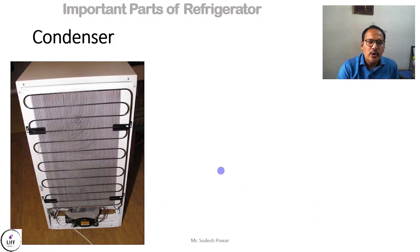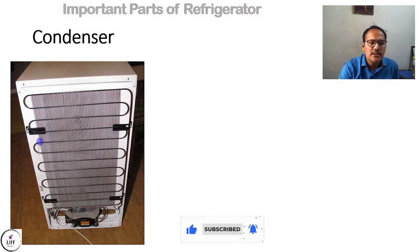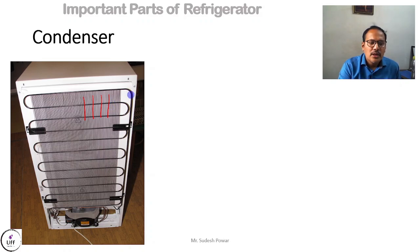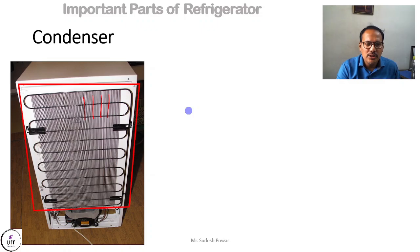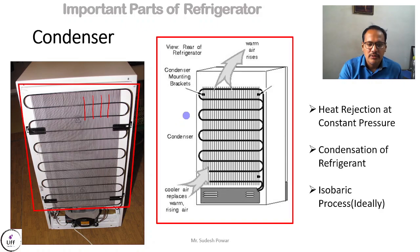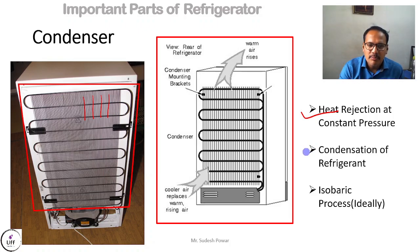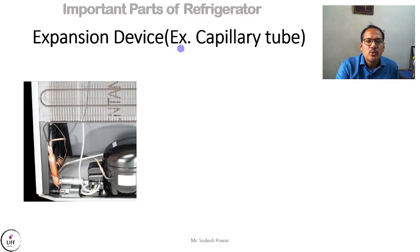The second important part is the condenser. At the back side of the refrigerator, you might have seen pipes — that is the condenser. Vertical fins are there to support the condenser. The condenser is a heat exchanging device whose main function is to extract heat from the refrigerant to the surrounding. This heat rejection happens at constant pressure, and because of it the vapor refrigerant is converted into liquid refrigerant — that is, condensation occurs. This process is ideally isobaric.